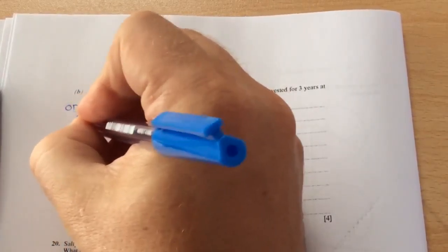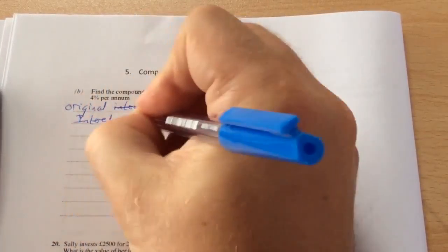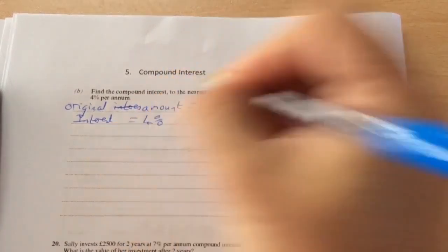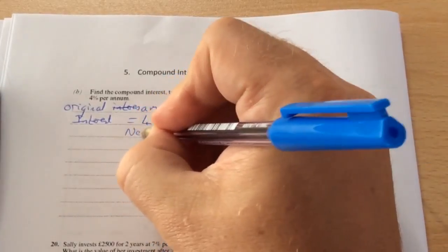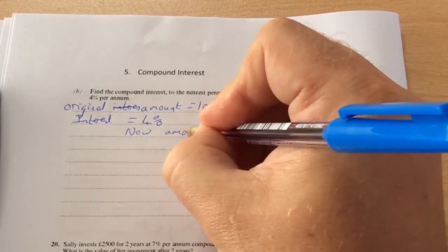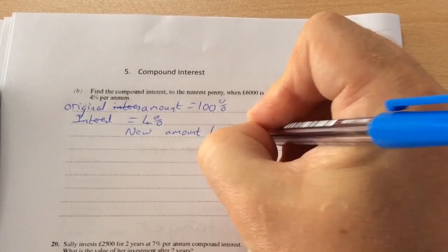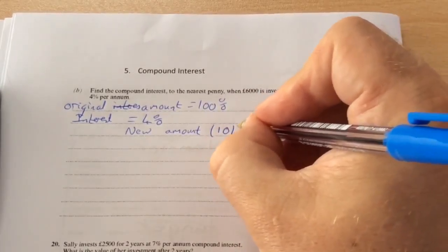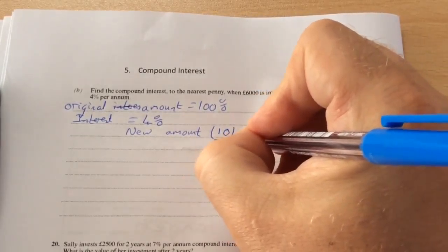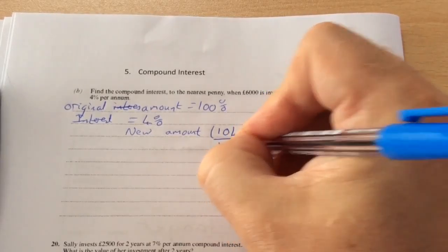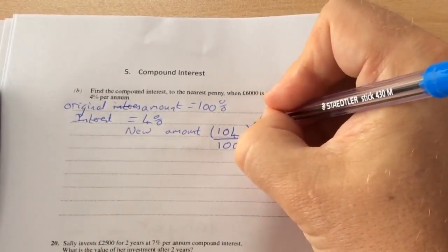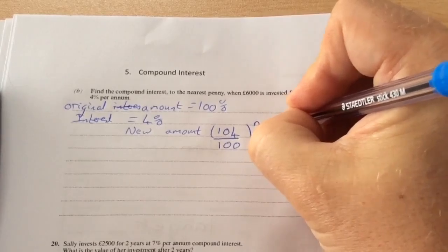Because the interest is 4%, we then say the new amount is going to be accumulating by 4%, so it becomes 100 plus 4, which is 104%. And how we write 104% is 104 divided by 100. You then write it to the power of the number of years.